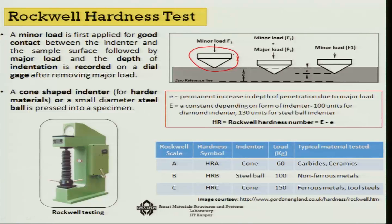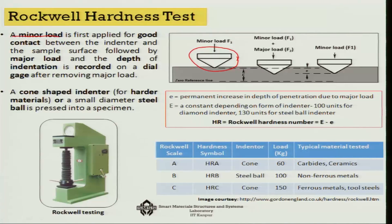In the Rockwell hardness test, two different loads are employed. A minor load is first applied for good contact between the indenter and the sample surface, followed by a major load. The depth of indentation is recorded on a dial gauge after removing the major load.